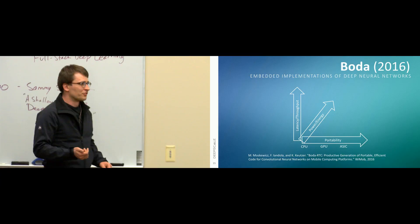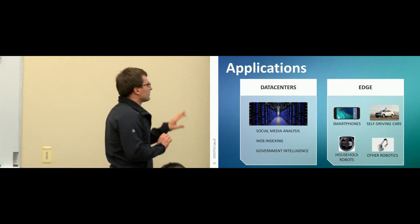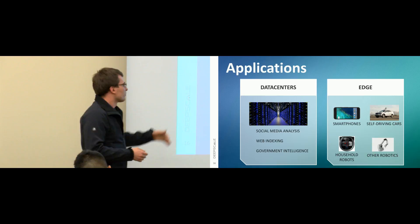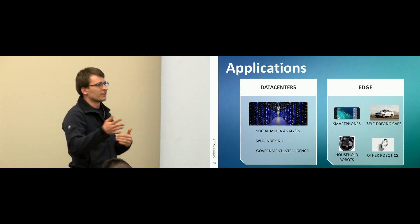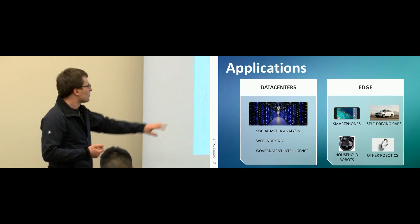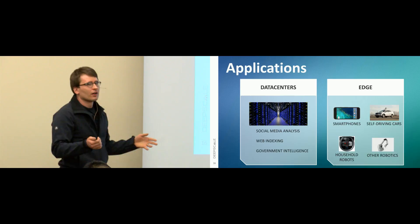From my perspective, there are broadly two kinds of deep learning applications. Data center applications — social media analysis, web indexing, government intelligence — often don't need to run real-time and aren't physically safety-critical. With large power budgets and deep learning maturity, to have a high-quality image search engine you pretty much already need to be using deep learning. This area is not entirely mined out but it's pretty mature.